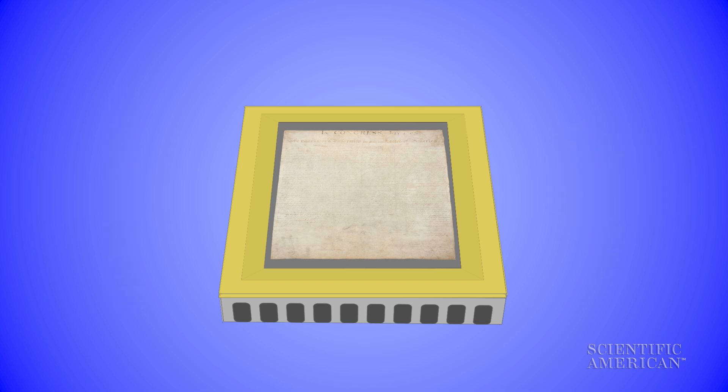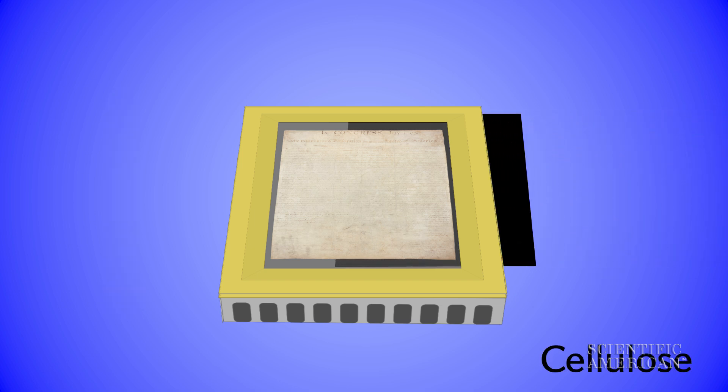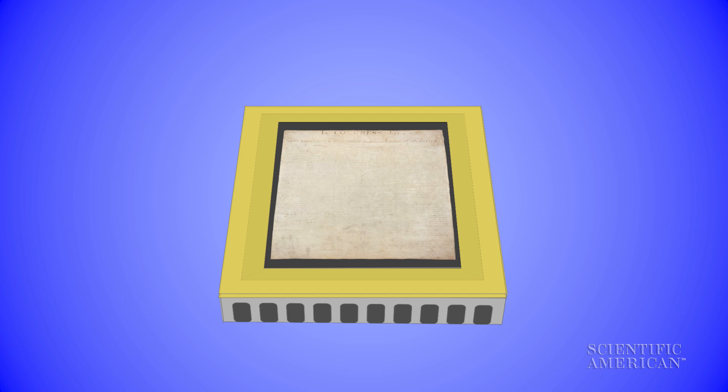The document sits on a sheet of cellulose paper, which helps regulate humidity, and an aluminum platform precisely cut to fit the parchment's irregular edges so it's invisible to visitors.